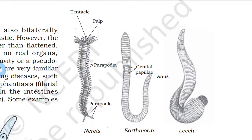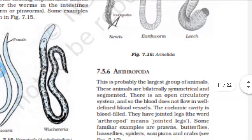To recap: Annelida animals are bilaterally symmetrical and triploblastic, with a true body cavity allowing organ packaging. There is extensive organ differentiation occurring in the segmentation pattern, with segments from head to tail. They are found in freshwater, marine water, and land. Earthworms, Nereis, and leeches are familiar examples.